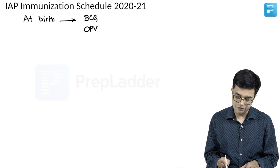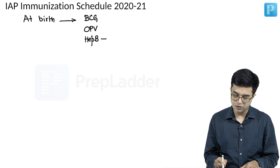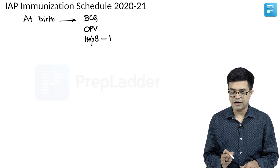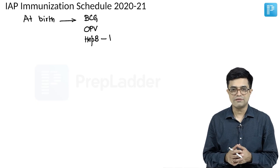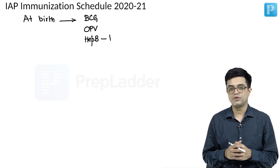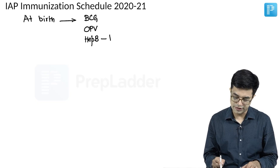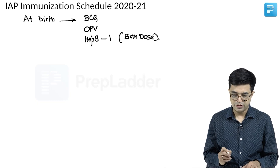Then you have hepatitis B. Instead of calling it hepatitis B 0 dose, the IAP schedule calls it hepatitis B 1st dose. Just the nomenclature is different — the national schedule calls it 0 dose, while this schedule calls it 1 dose. It is also written as BD, that is birth dose.